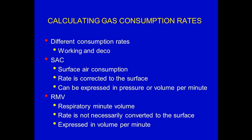Before we begin, I'm going to review some basic gas consumption concepts. First, there are generally two different types of consumption rates. The first is known as the working rate, and this is used generally for descents, time on the bottom, and also for ascents. The second rate is the deco or decompression rate, and this is used to determine gas consumption rates during decompression stops and on ascents between decompression stops.